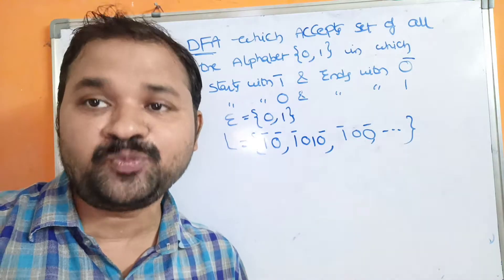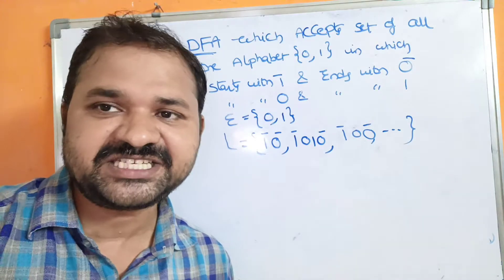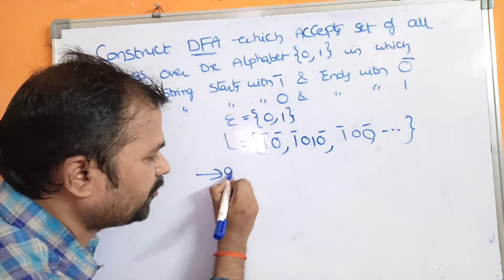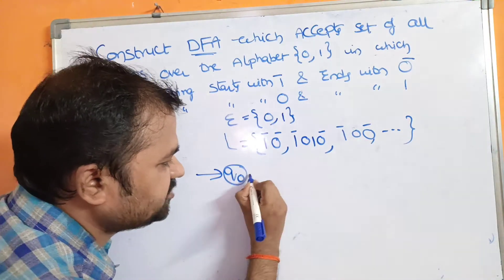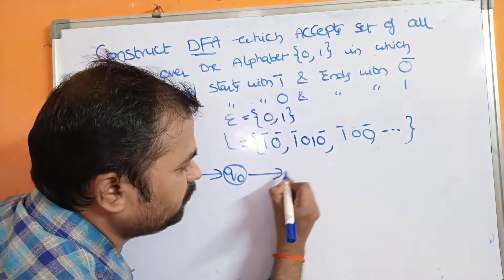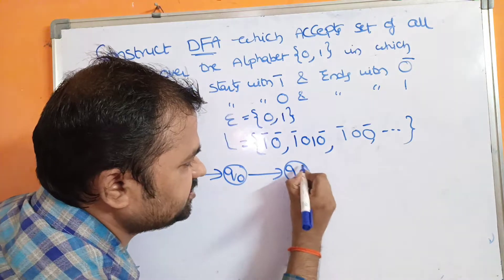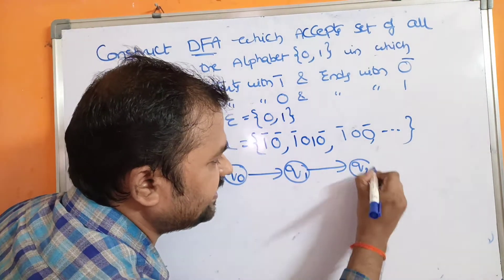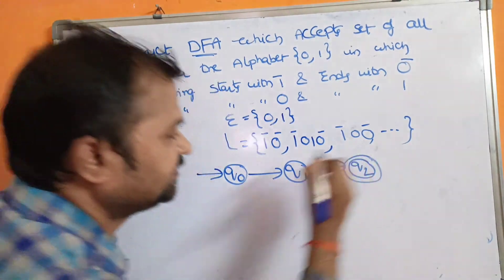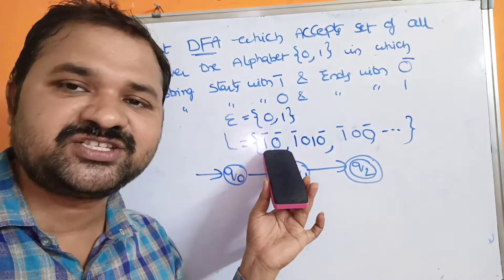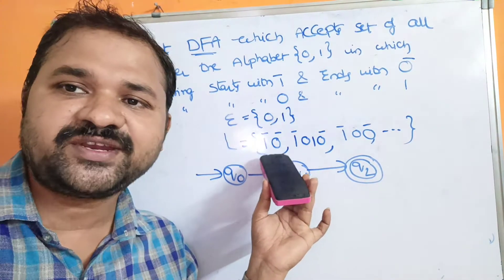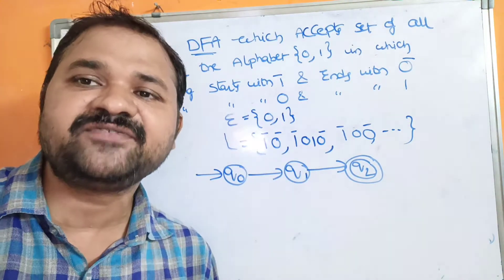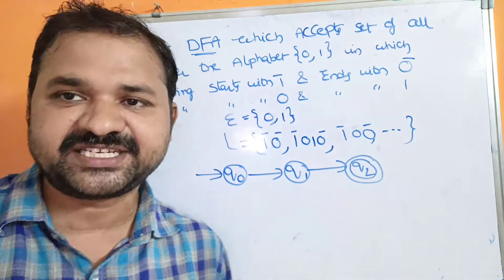Since the minimum string has two characters, we require 2 plus 1 — three states. Let the starting state be Q0, the next state Q1, and the next state Q2. The minimum string is '10', so it contains two characters, requiring three states.